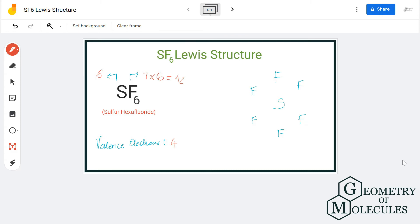Now that we know the valence electrons, we'll start placing the atoms with its valence electrons in the structure. Sulfur will go in the center and all the fluorine atoms will be arranged around sulfur like this.